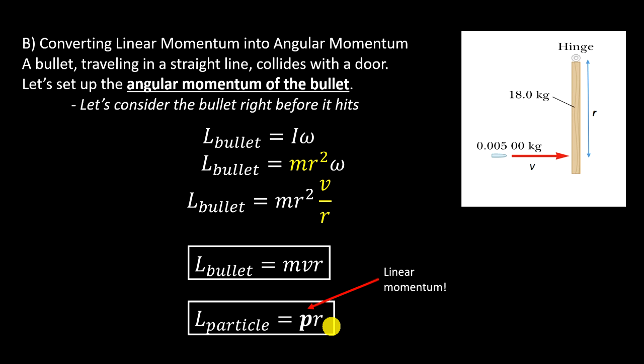So, again, we have kind of this easy translation of cousins. We can pretty easily go from linear momentum to angular momentum just by multiplying by r. So, this is how I can treat the linear momentum of the bullet. I can convert it to angular momentum just by knowing how far away it is from the hinge.